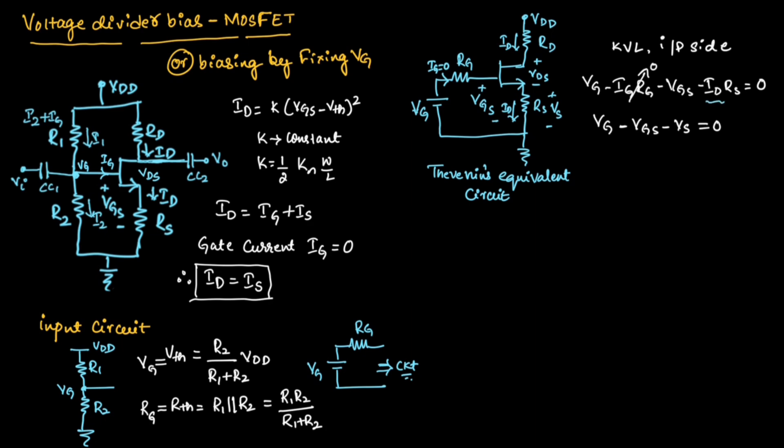So in place of Id Rs, we have written it as Vs. So from the above equation, we can write Vgs is equal to Vg minus Vs. So this is the expression for input voltage.